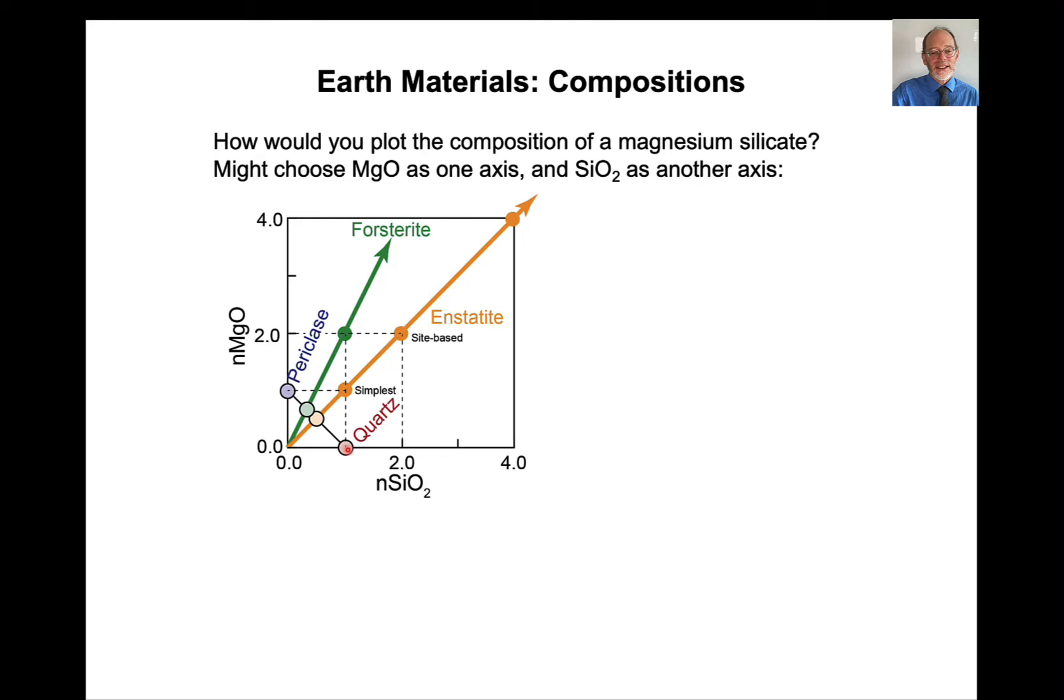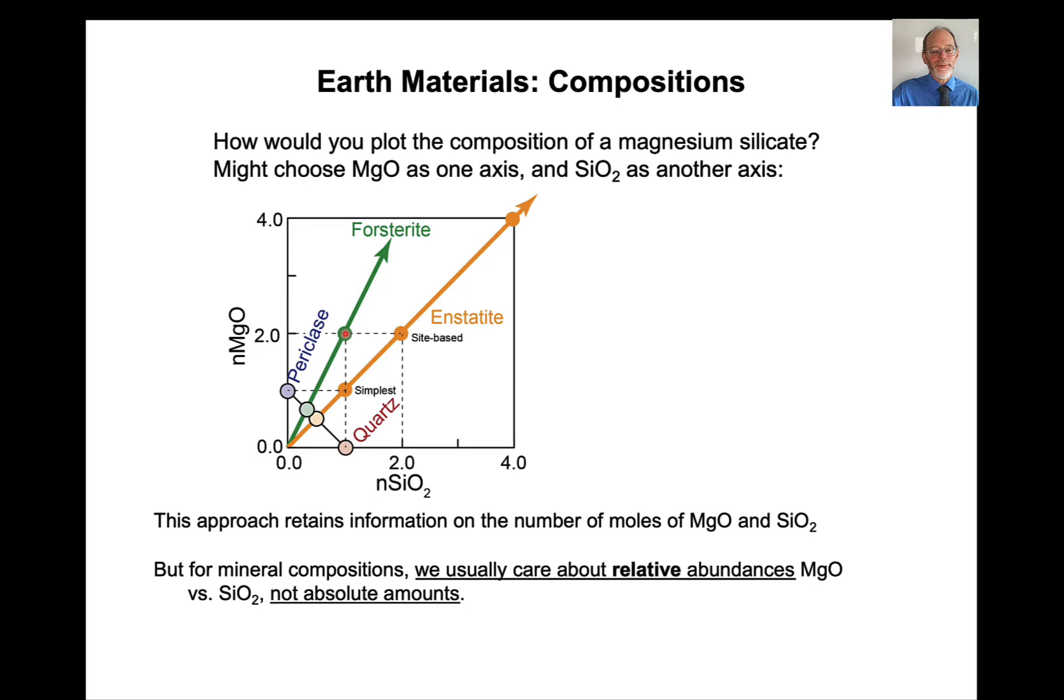If we know the number of moles then we can simply plot a composition. This would have SiO2, one mole of that and one mole of MgO, so this would be MgSiO3. This has two moles of magnesium oxide, so Mg2SiO4. Now this approach retains the information on the number of moles of magnesium oxide and silicon dioxide. That's not often what we care about.